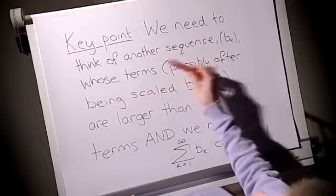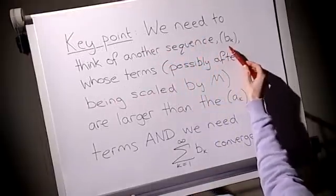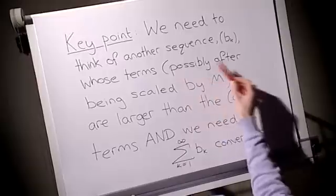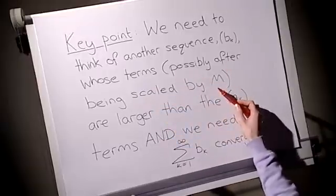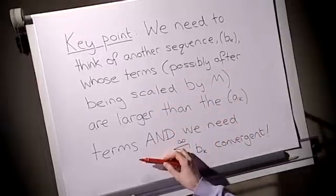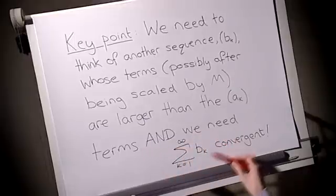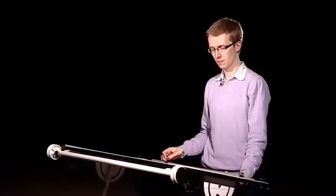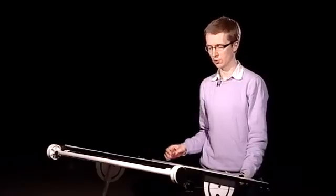So the key point here was that we needed to think of another sequence, these bk's, whose terms, possibly after being scaled by m, are larger in modulus than the ak terms. And, of course, we had to choose a bk which was convergent. So those are the two things we've got to think about.